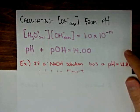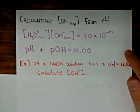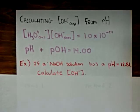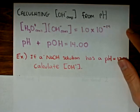The question says that if a sodium hydroxide solution has a pH of 12.81, calculate the hydroxide ion concentration.